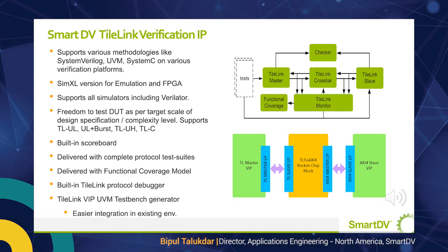In the block diagram here, I show a test bench with our UVM agents in color green from our TileLink VIP package. Any of the master, crossbar, and slave agents can be replaced with a user design under test block to execute block-level verification. In addition to the main TileLink agents, the VIP comes with a functional coverage model that connects to the TileLink monitor through analysis ports, and a scoreboard that we term as the checker. The other block diagram shows a practical example for verifying the TileLink to AXI-4 bridge from Rocket Chip at block level, using SmartDV TileLink master VIP agent and SmartDV AXI VIP slave agent.